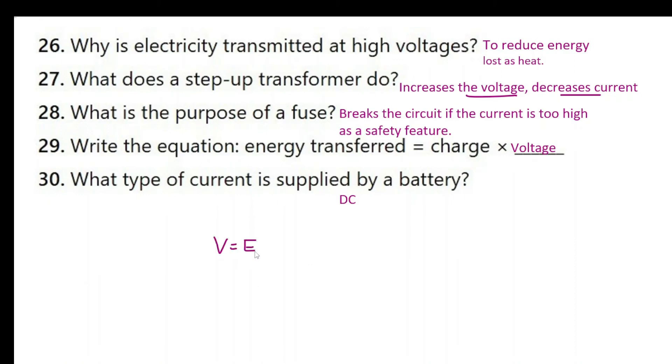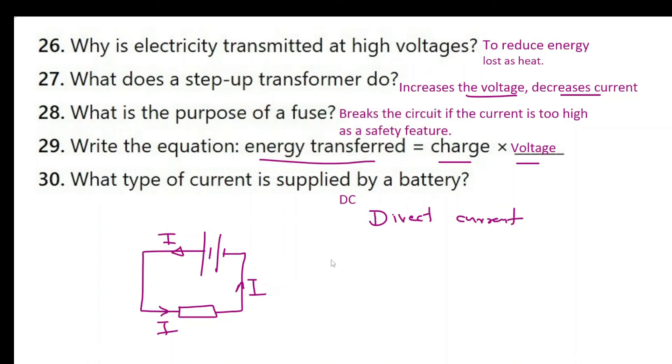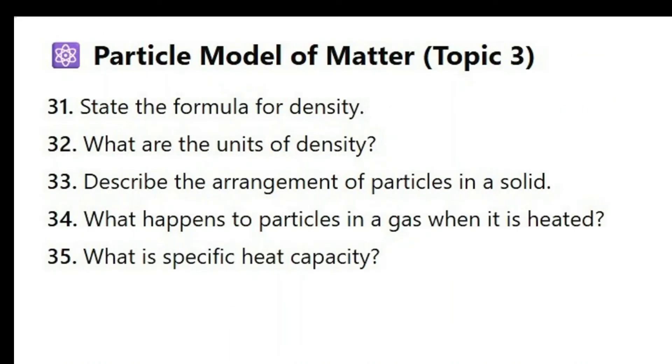Question number 29 is about the formula. V is equal to E over Q. V is the voltage in volts, E is the energy measured in joules, Q is the charge measured in coulombs. So if I make E the subject I can move the Q to that side. V times Q is equal to E. Energy transfer is voltage times charge. The type of current provided by a battery is DC or we call it direct current. So the nature of direct current is the battery pushes the current in one direction. And there is no reversing like in AC. So if you plot a graph of current against time it is a graph like that.